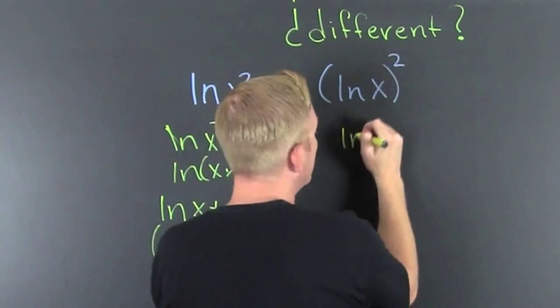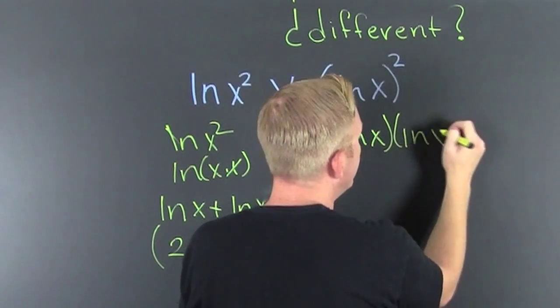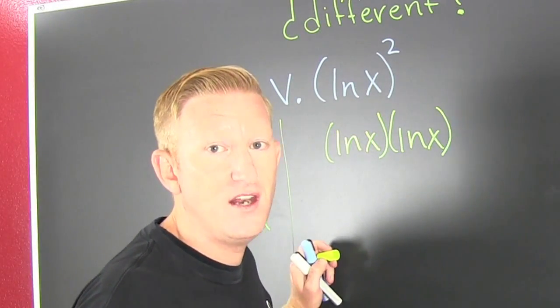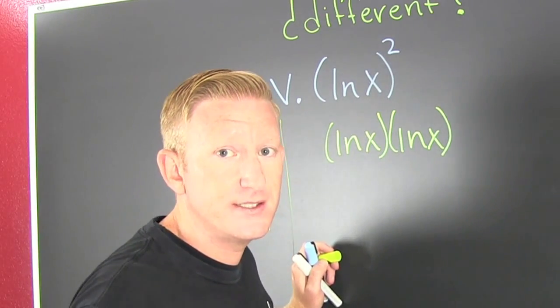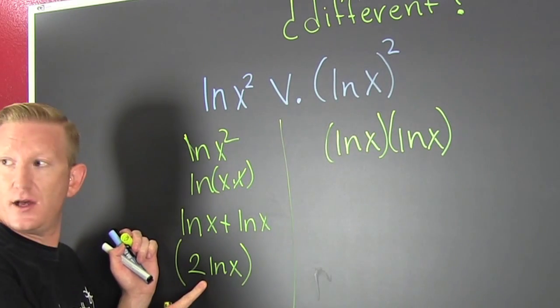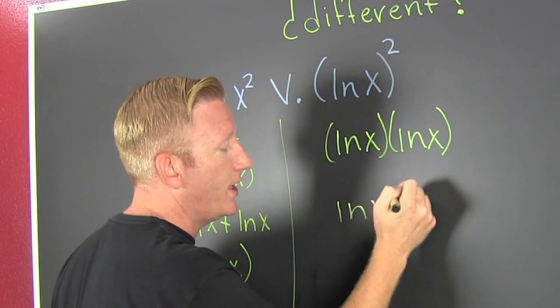This is the natural log of x times the natural log of x. What's next? Nothing. These two are totally different. That is 2 times the natural log of x. This is the natural log of x squared.